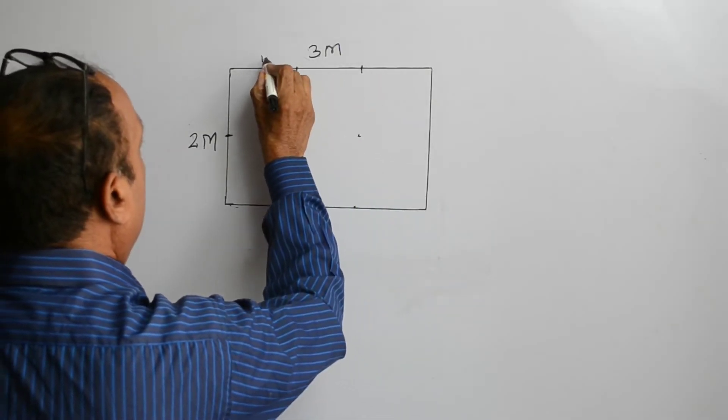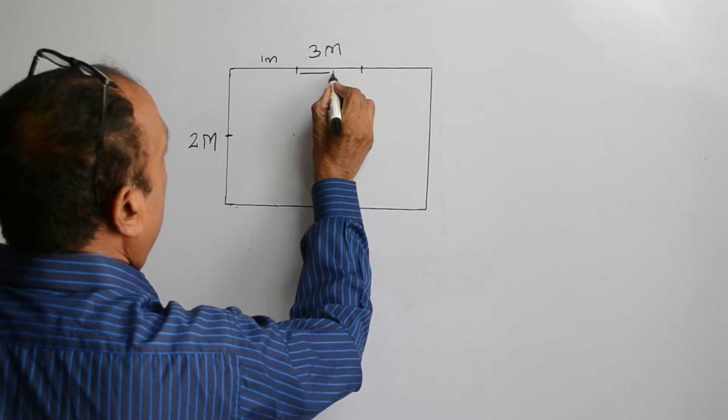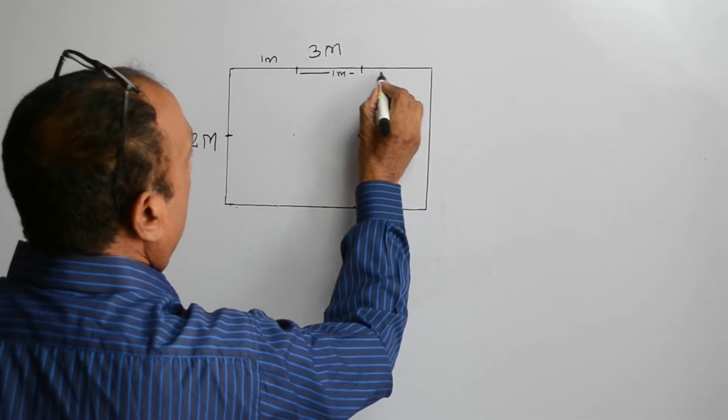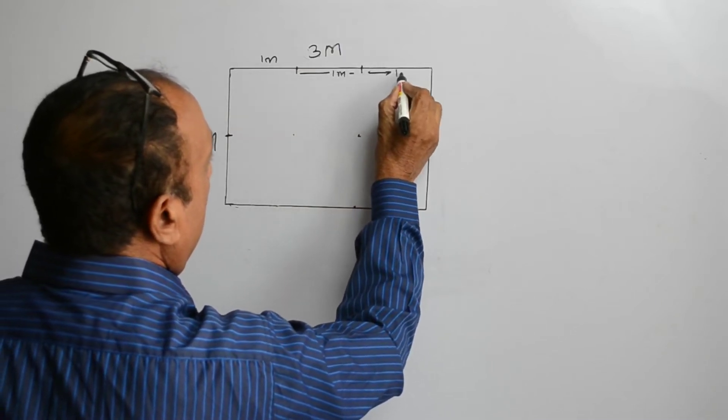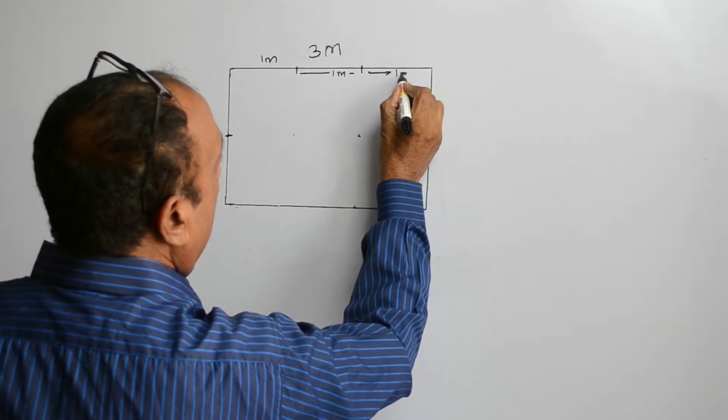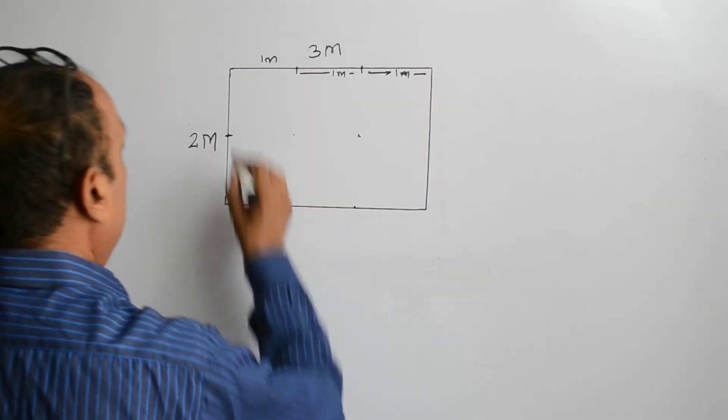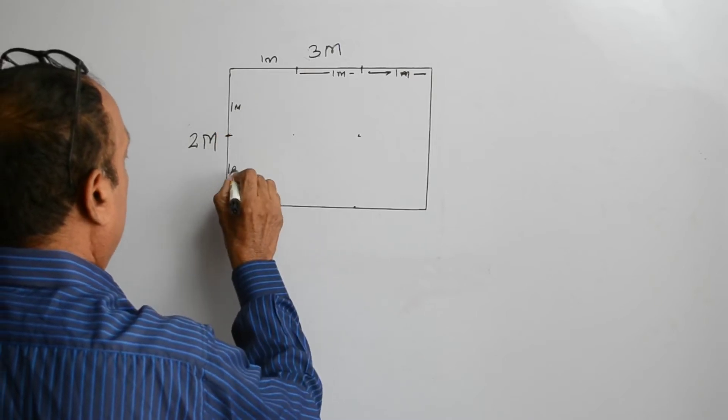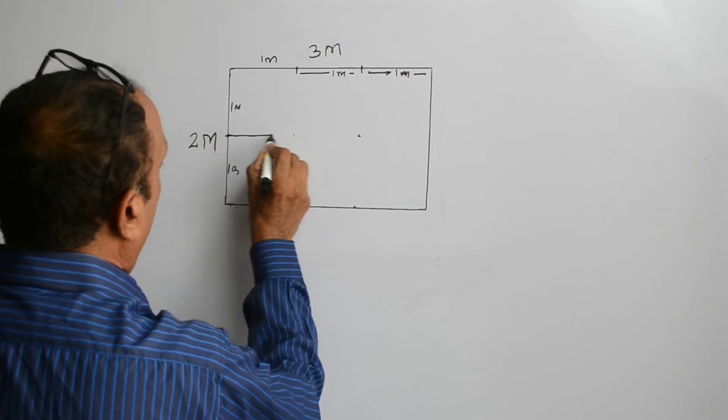This is 1 meter, this is 1 meter, this is 1 meter, so 1 meter, 1 meter. Now, let us join these points.